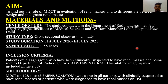Materials and Methods. The study was conducted in our department. Study type is cross-sectional observational study. Study duration: 1st July 2021 to 1st July 2022. Sample size is 55 cases. Inclusion criteria: patients of all age groups who were clinically suspected to have renal masses and were sent to our department were included in the study.